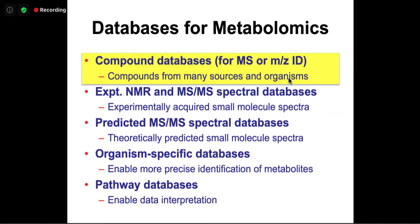There are five different groups of databases for metabolomics: general compound databases, experimental spectral databases with reference spectra, predicted spectral databases, organism-specific databases, and pathway databases. Compound databases have large numbers of compounds for level three or putative identification. Experimental spectral databases allow up to level two identification. MS/MS predicted databases potentially also allow level two identification. Organism-specific databases narrow down possibilities considerably, and pathway databases help with data interpretation.